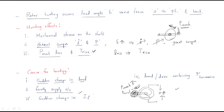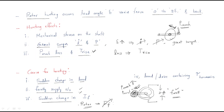Second cause: faulty supply voltage. If the supply voltage has a fault value — a wrong value — hunting will occur automatically. Third cause: sudden change in field current. If the field current connected to the rotor is suddenly varied, hunting will occur automatically.